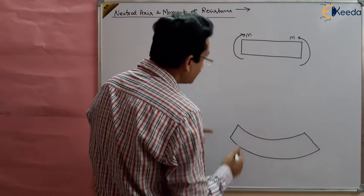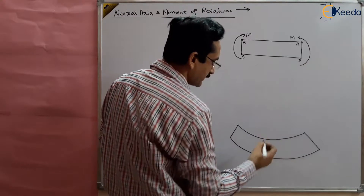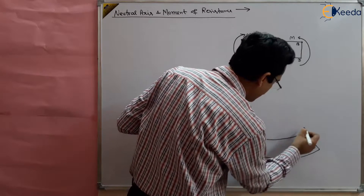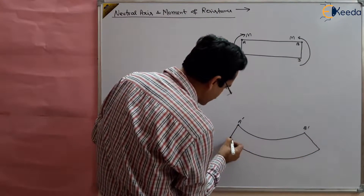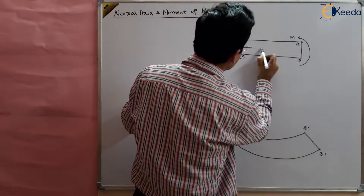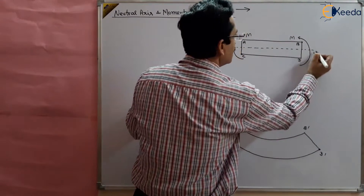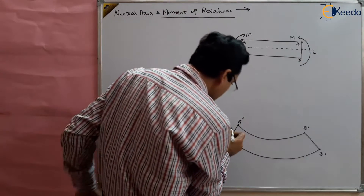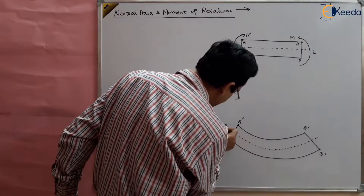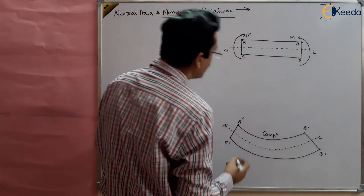You can see that layer AB is compressed and layer CD is extended. AB becomes A'B' and CD becomes C'D'. Suppose this is the center axial line of the beam — the neutral layer. In this neutral layer, no stress is developed. Due to the sagging bending moment, in part AB there is compression and in CD there is tension.